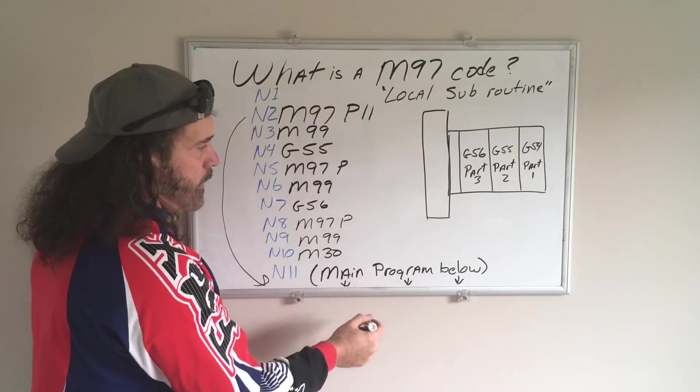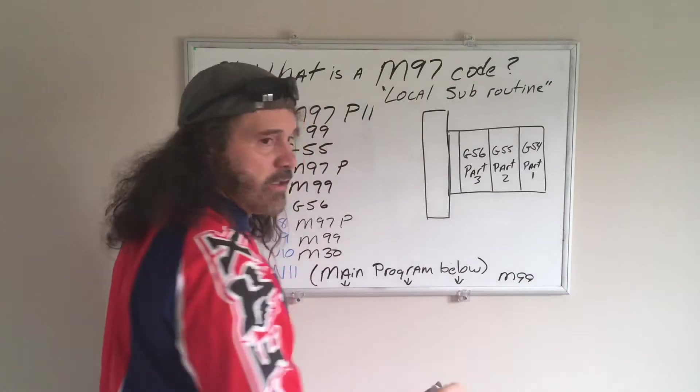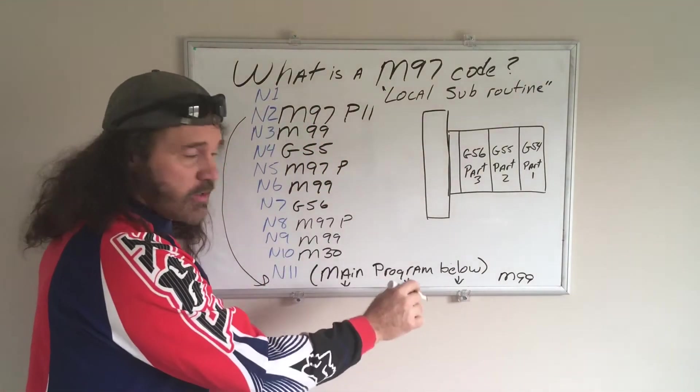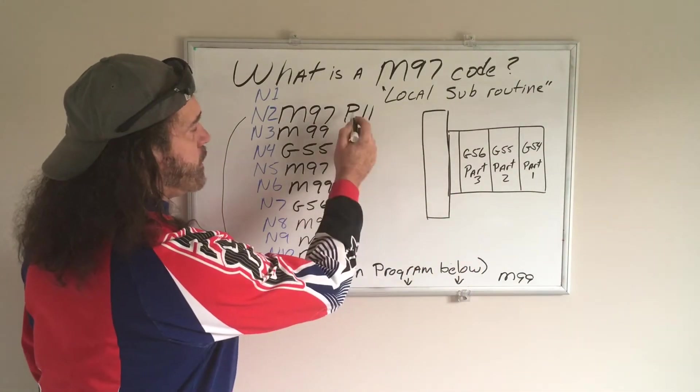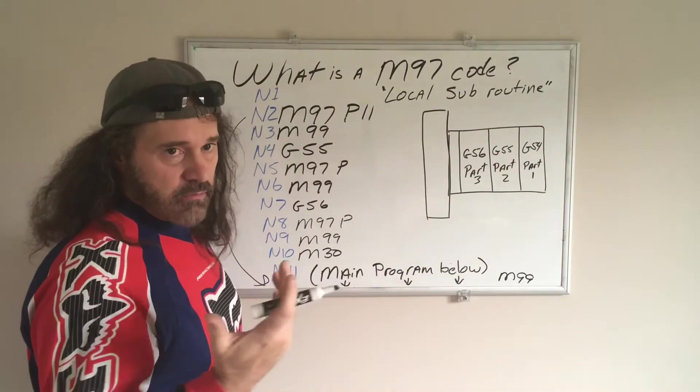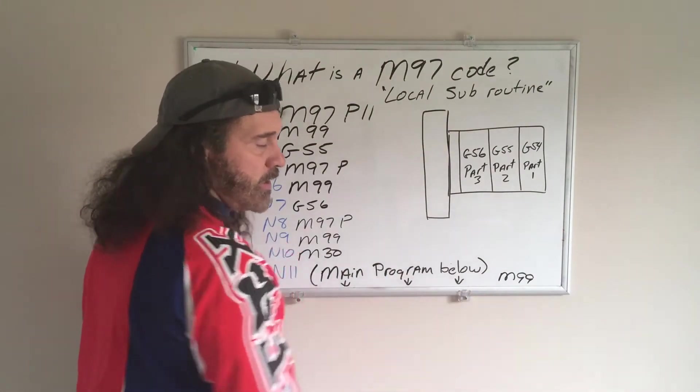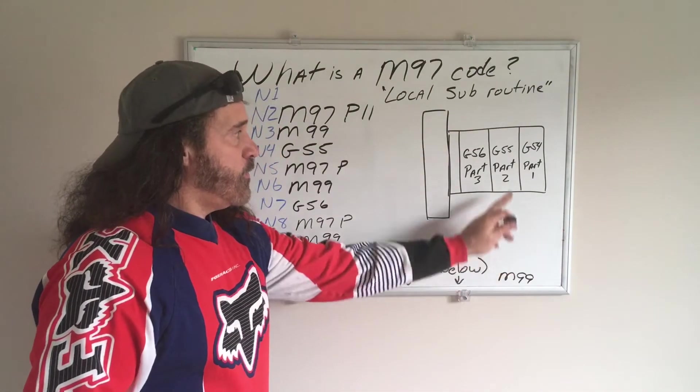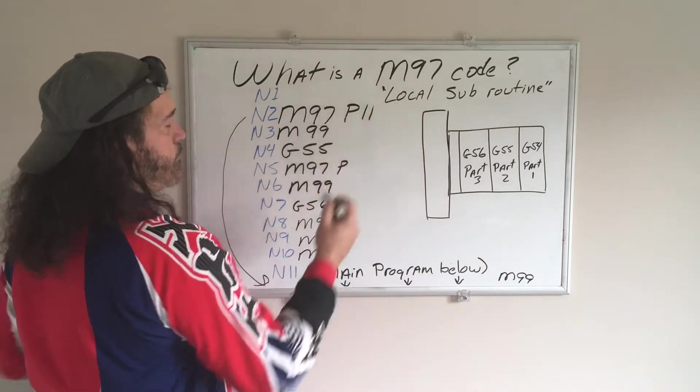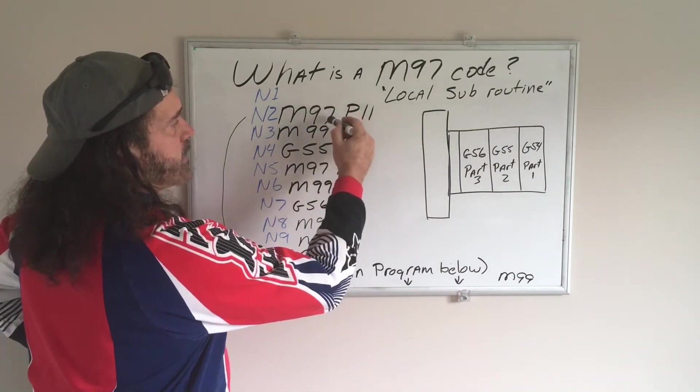At the end of your program, make sure you have your M99 at the end of the program. And that tells it to loop back up to here, because you're going to need that. If you put an M30 at the end of the program, it won't continue. So you have to have your M99 to come back up to here. It's going to come back to here. Now it's going to move to your next line of code.